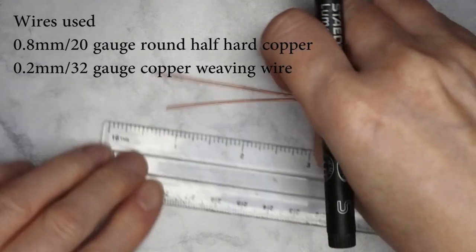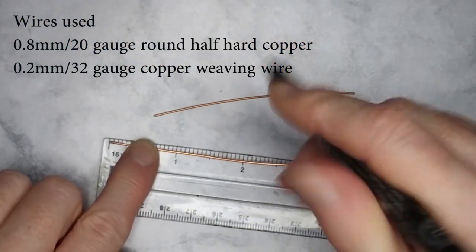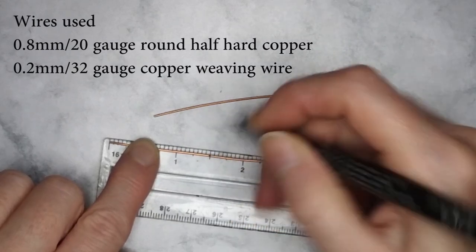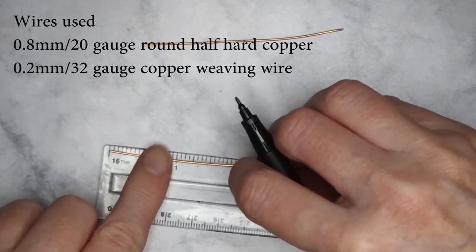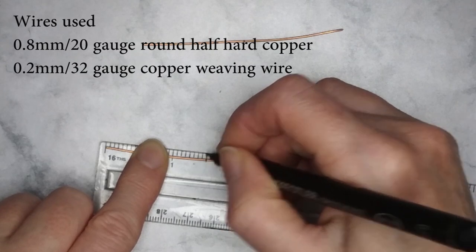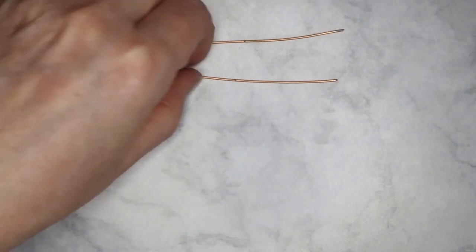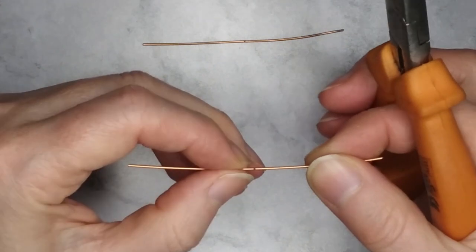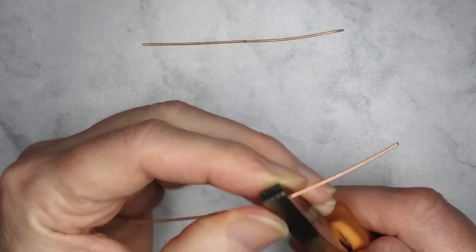Start by finding the centre point of the wire. I will start with the sun catcher - at the centre point bend the wire at a 90 degree angle.